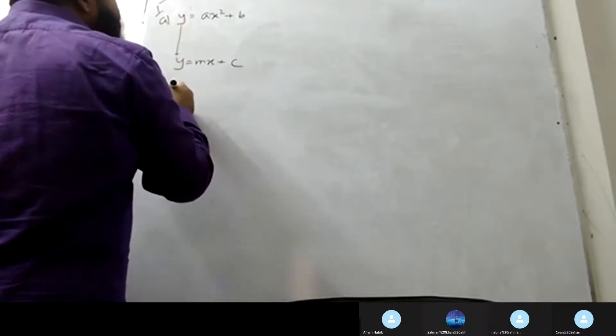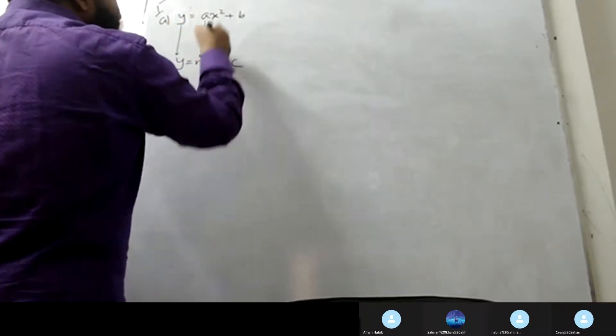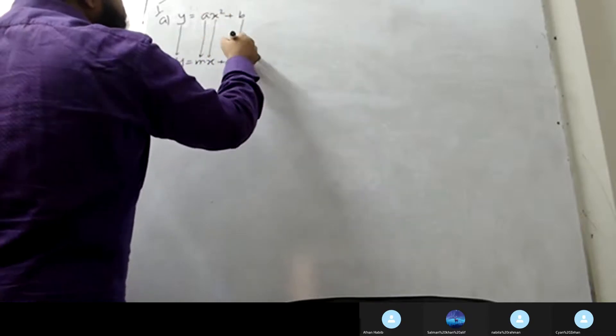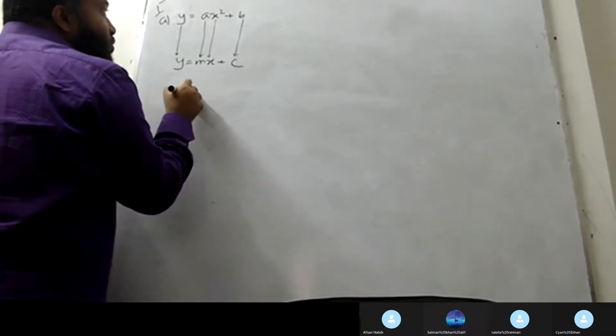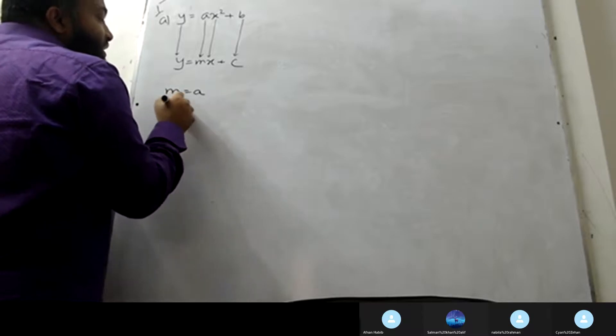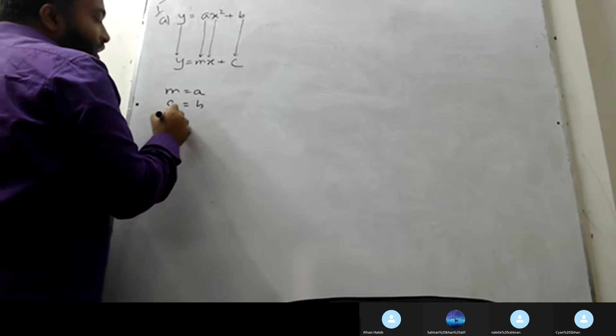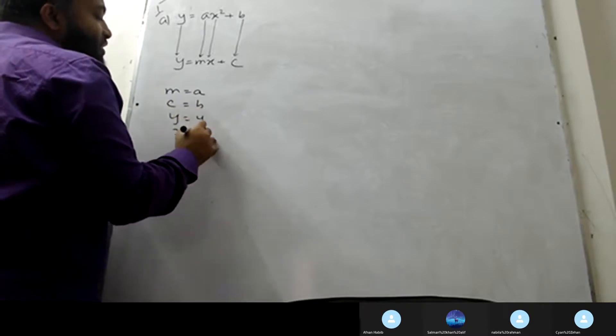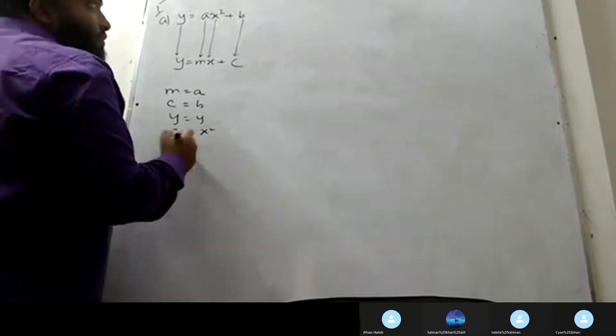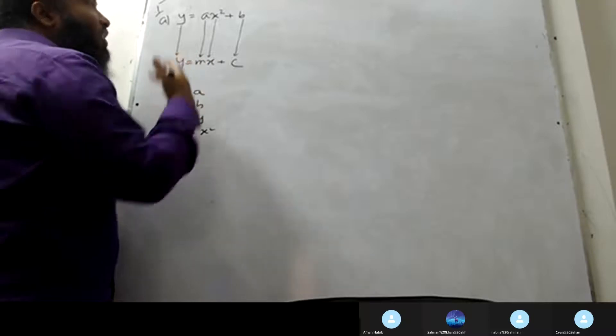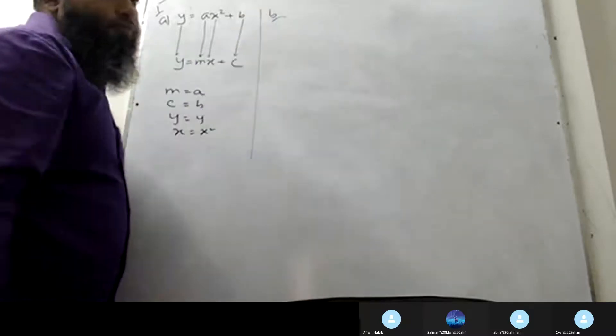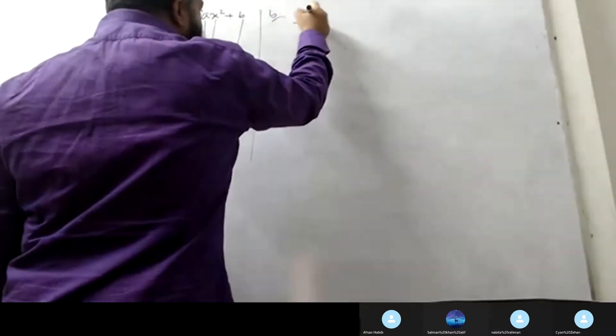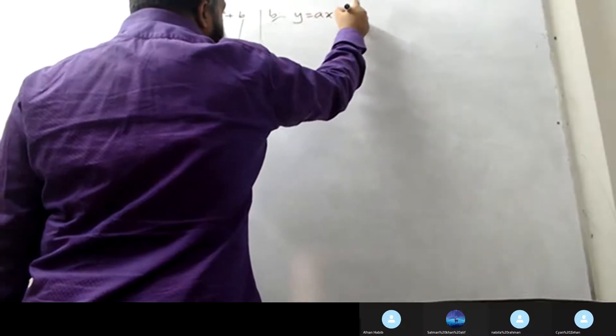That means y represents y, m represents a, x represents x square, and c represents b. So m represents a, c represents b, y represents y, and x represents x square, which gives y equals ax square plus b.